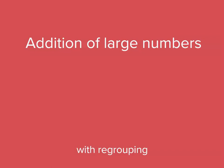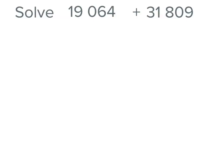We're going to be adding large numbers where we need to do regrouping. Now we're adding 19,064 to 31,809. Both numbers are five digits long, so let's start with this one first.